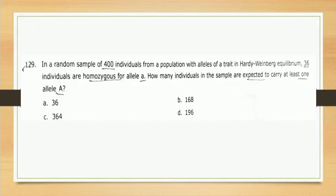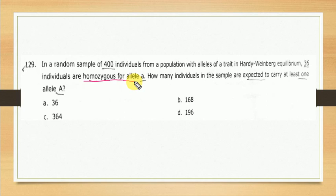Question asked in the CSIR examination 2014. In a random sample of 400 individuals from a population with alleles of a trait in Hardy-Weinberg equilibrium, 36 individuals are homozygous for the recessive allele — that means homozygous recessive. How many individuals in the same sample are expected to carry at least one dominant allele capital A?